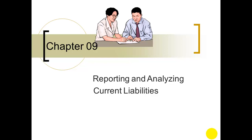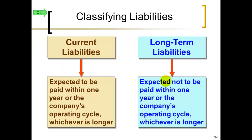Hi again, this is Roy with another video lecture, this time for chapter number nine, where we are going to cover current liabilities. Current liabilities are amounts we owe that we expect to pay either within one year's time or within one operating cycle, whichever is longer. Typically one year is longer. So if you owe amounts and they have to be paid within a year's time, we would classify that as current.